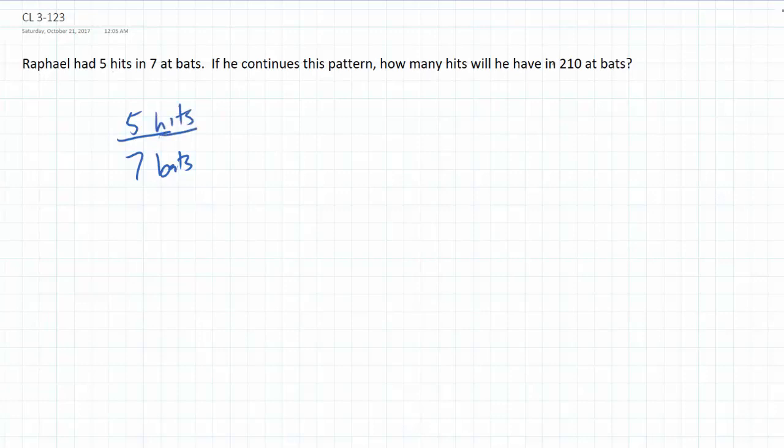And we're going to use proportional relationships or our skills with solving proportions to solve this problem. We know that in every 7 bats, he hits 5 times.